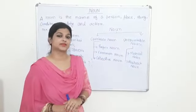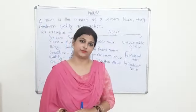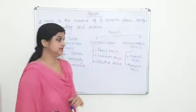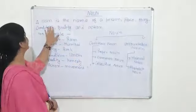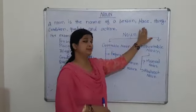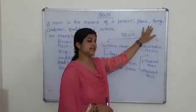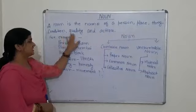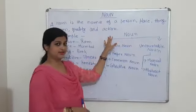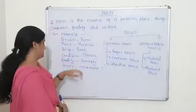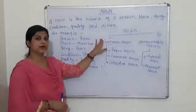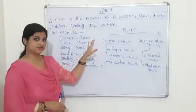Let's start. We will see first of all the definition of noun. A noun is the name of a person, place, thing, condition, quality, and action. For example, a person like Ram, Mohan — any name you can take.